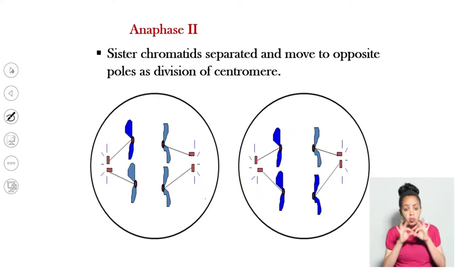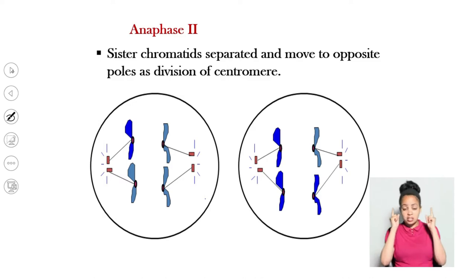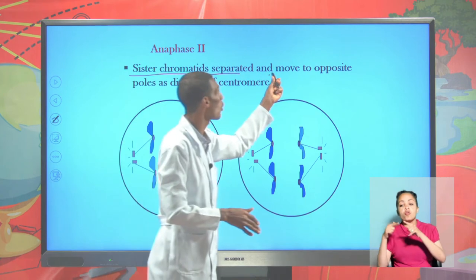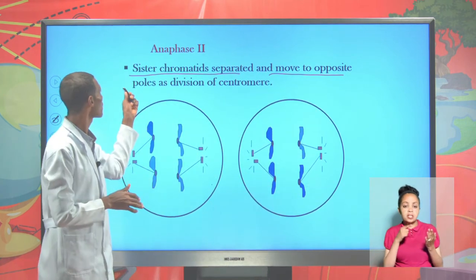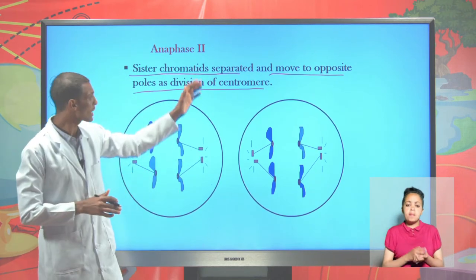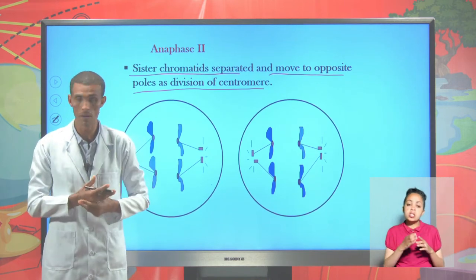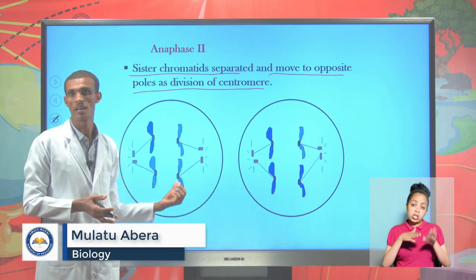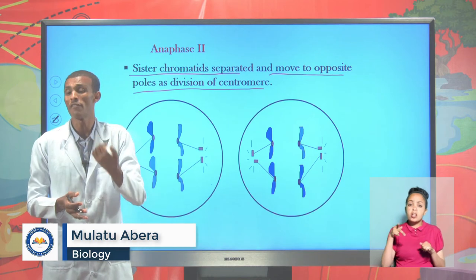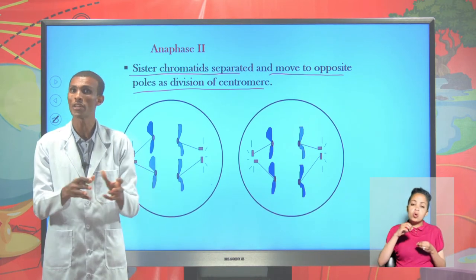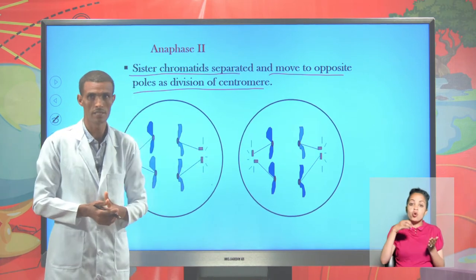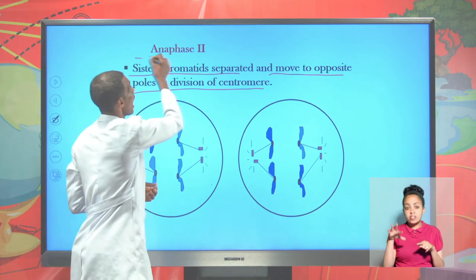Another very important and critical stage of meiosis II is anaphase II. During anaphase II, there is a separation of sister chromatids, and sister chromatids move to opposite poles. There is a separation or division of the centromere here. We no longer speak about homologous chromosomes after anaphase II. During all stages of meiosis I and some stages of meiosis II — like prophase II and metaphase II — we spoke about homologous chromosomes because the original and copy chromatids were found together.